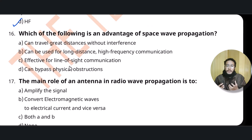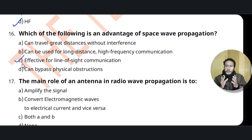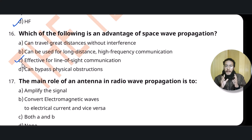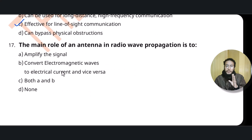Question sixteen: which of the following is an advantage of space wave propagation? Its biggest advantage is that it is most effective for line of sight communication, because the frequency used in line of sight communication fits well with space wave propagation criteria — so it enables good line of sight communication.